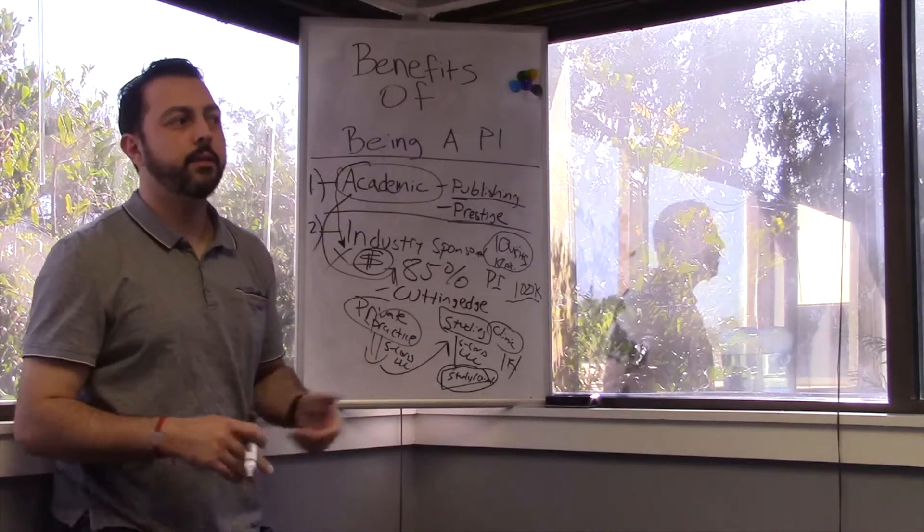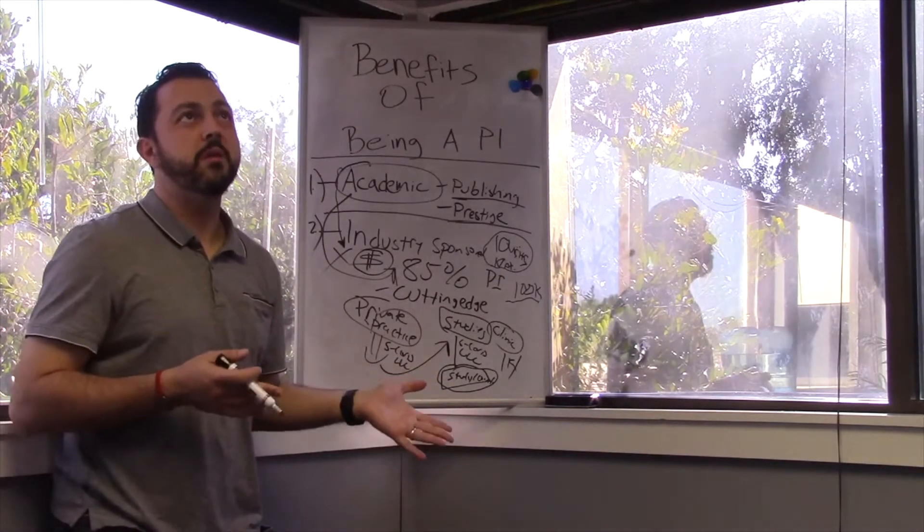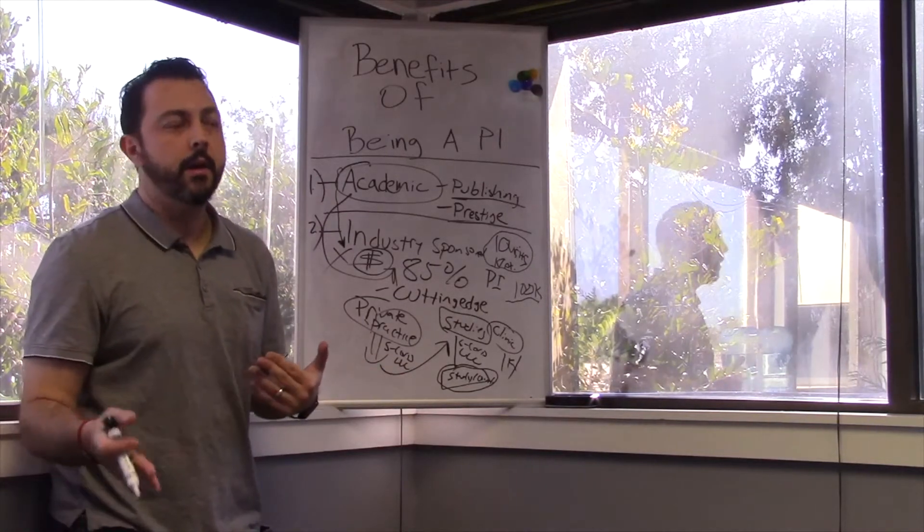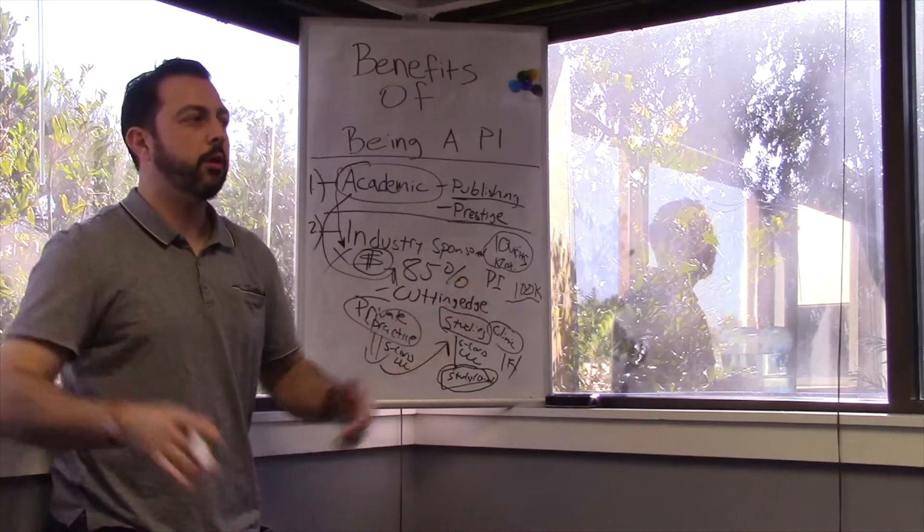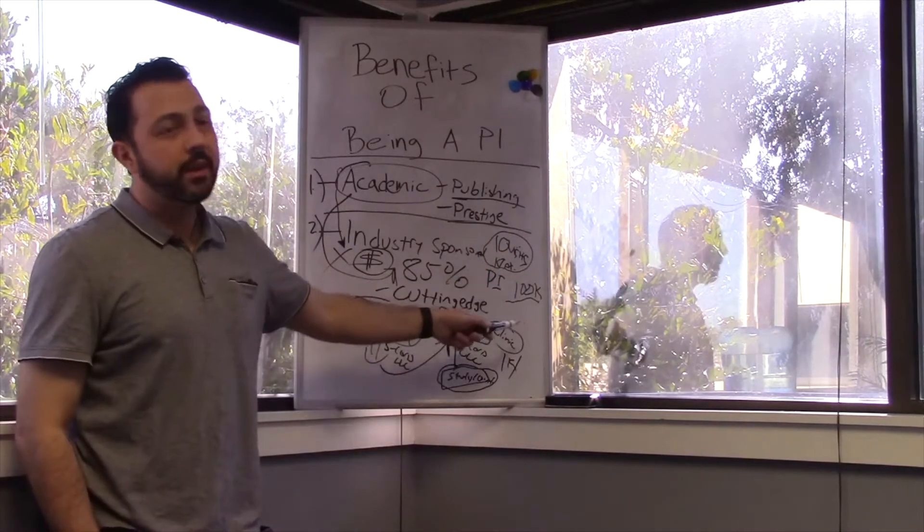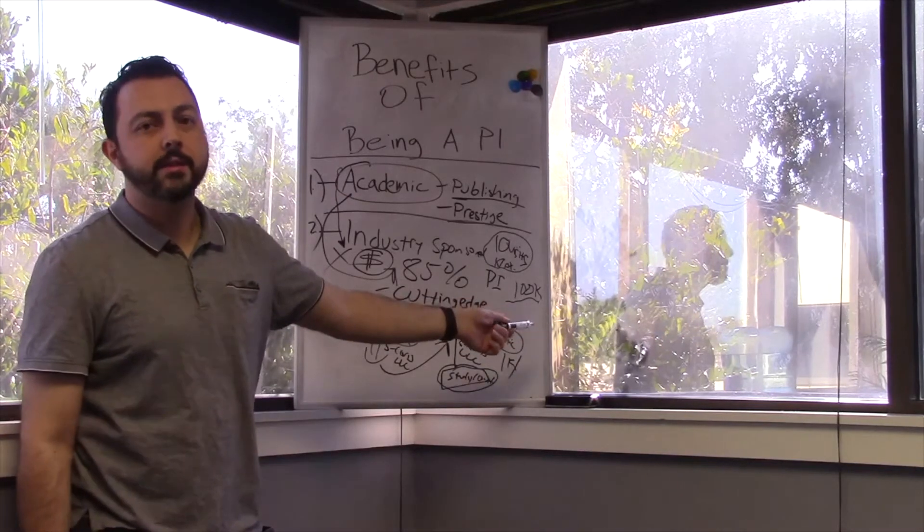Most new sites get three or four studies in their first year, and then they get maybe six to eight studies in their second year, and then they can either continue at that pace or they can grow. So, you can see, in your second year, if you're doing six to eight studies, you're making, let's say, $600,000 a year.